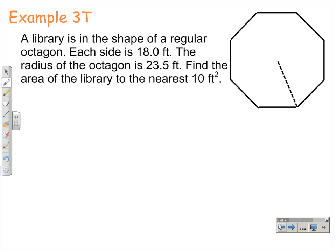In example 3T, a library is in the shape of a regular octagon. Each side is 18 feet, the radius of the octagon is 23.5 feet. Find the area of the library to the nearest 10 square feet. You have a couple pieces of information we should put on the diagram.